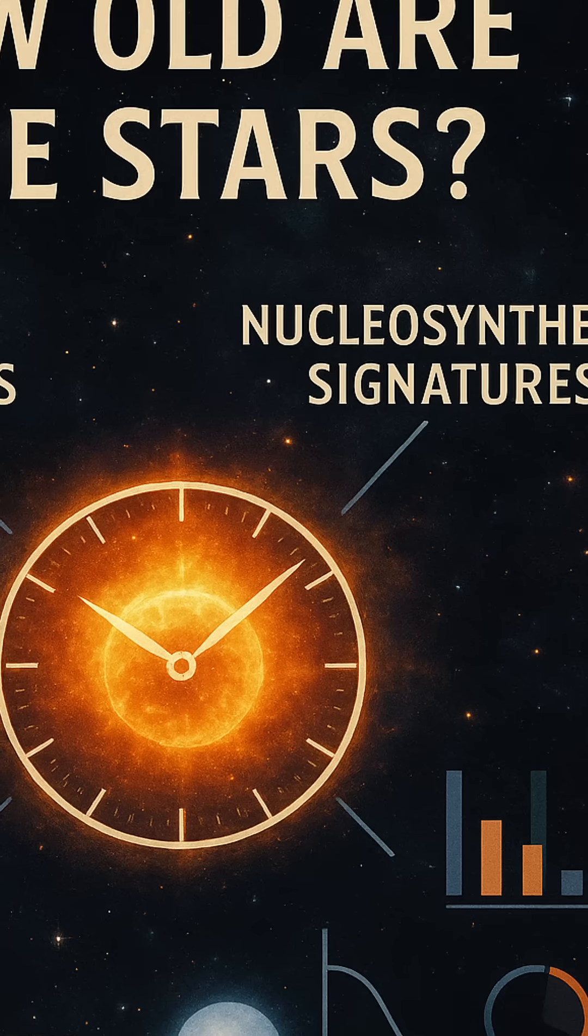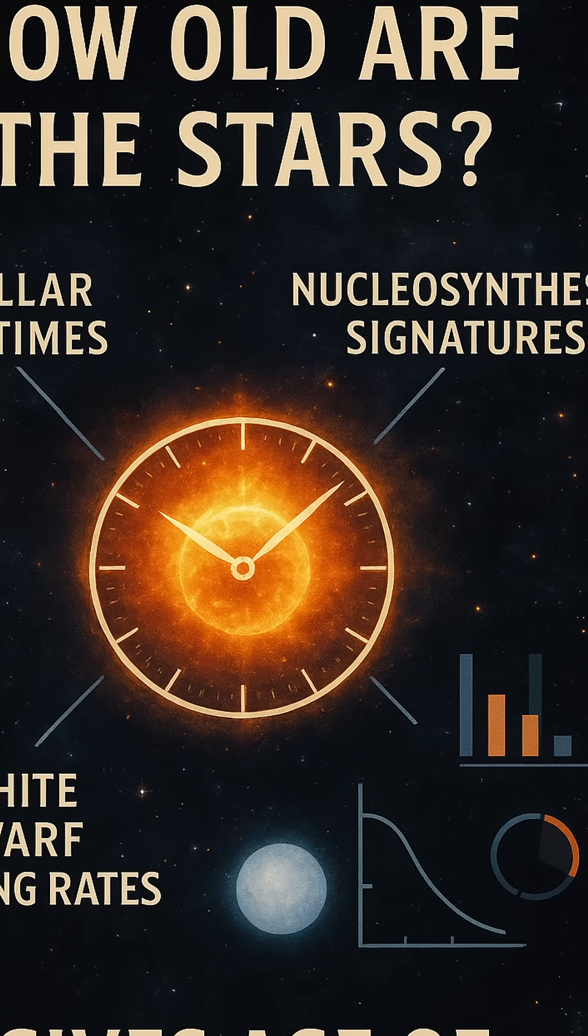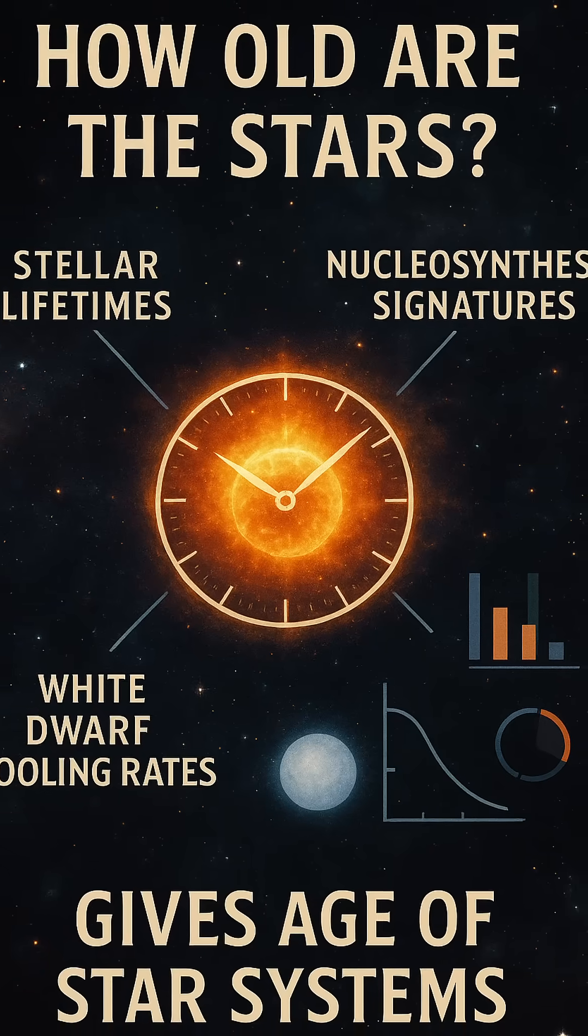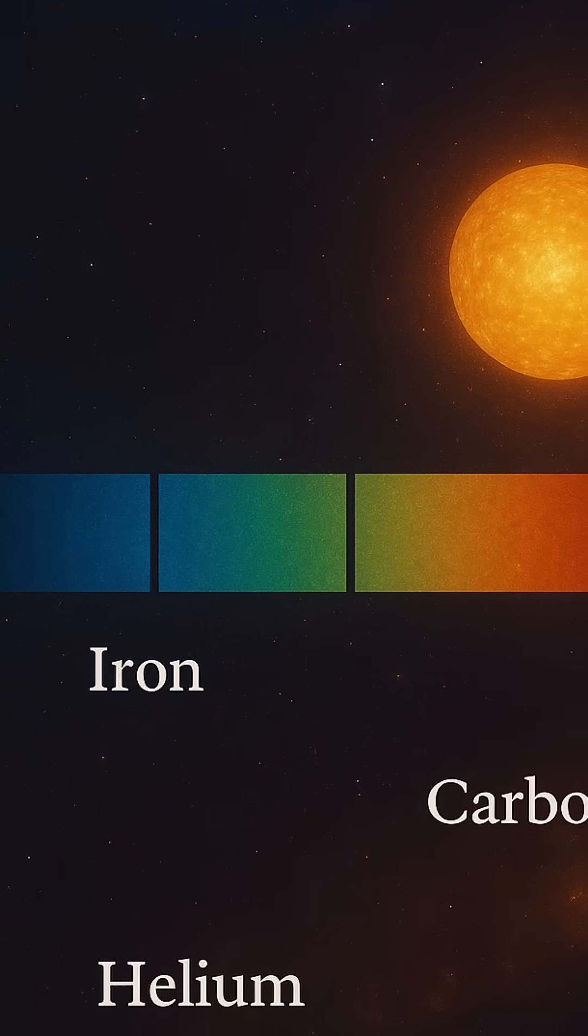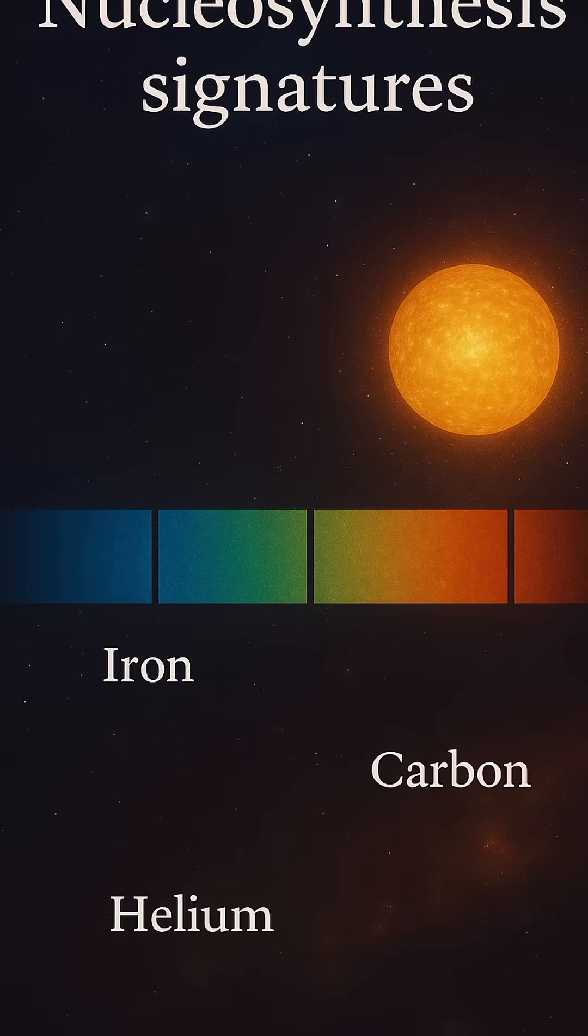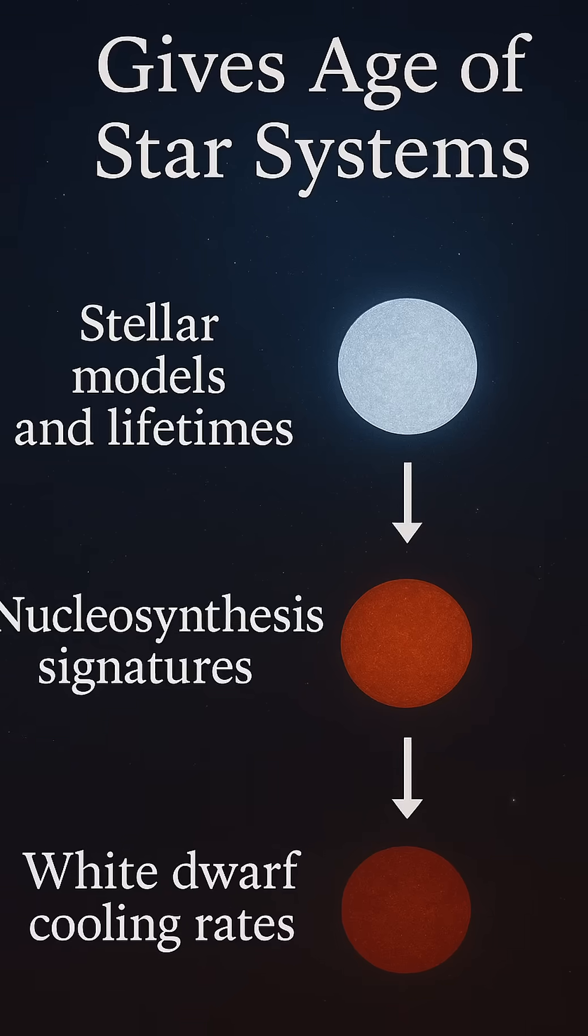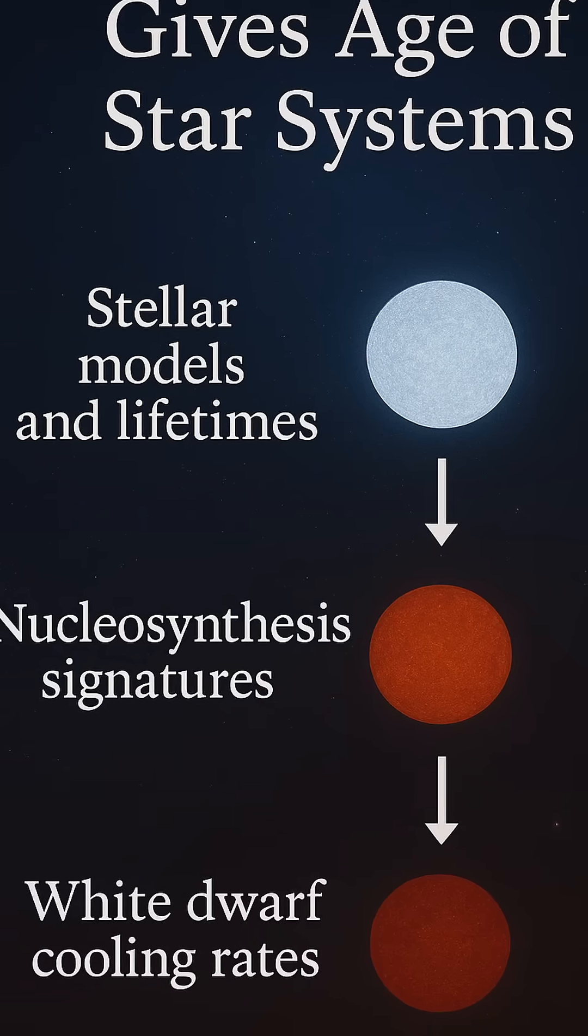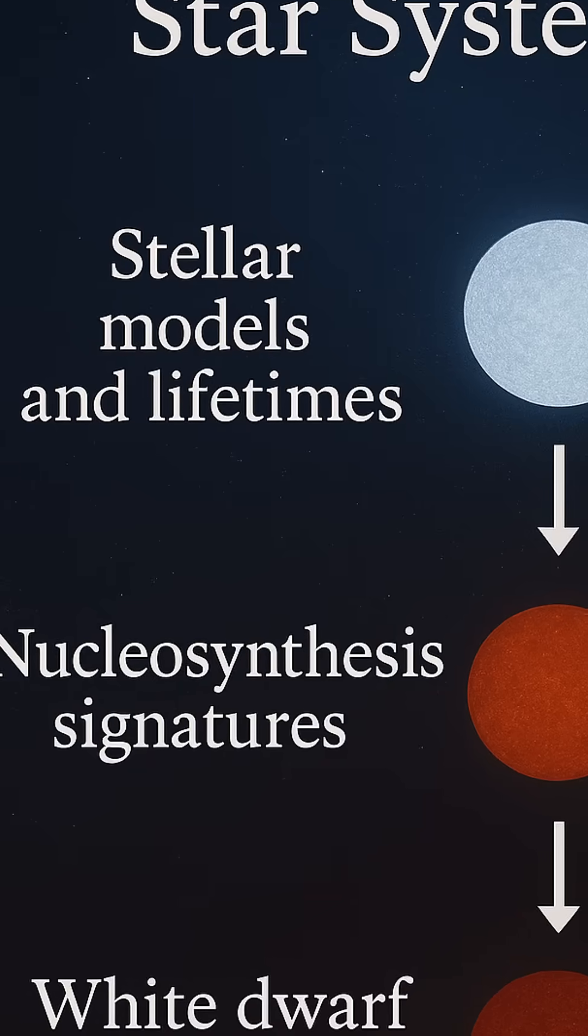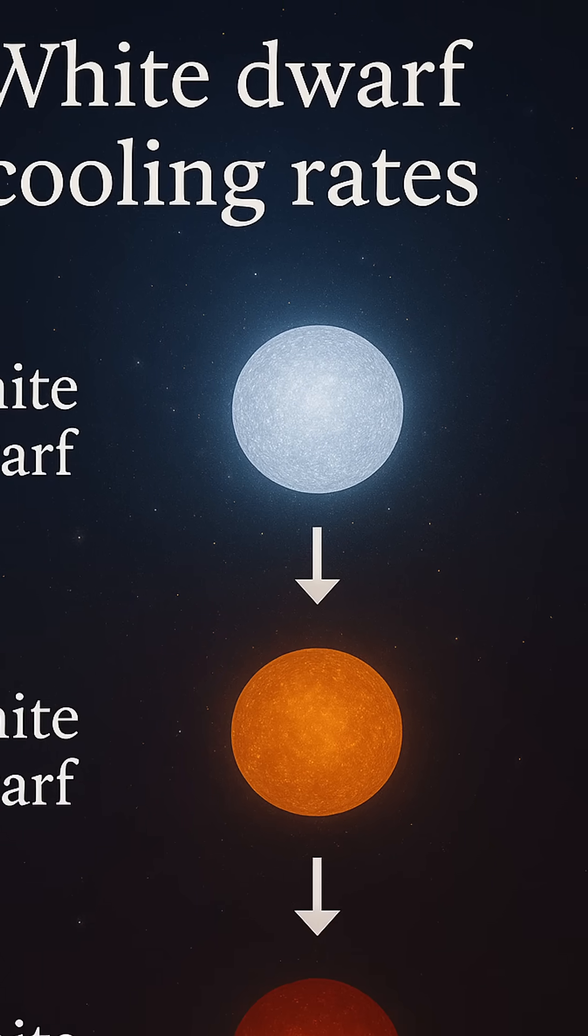Then there are white dwarfs, stellar corpses that no longer burn fuel. After a star like our sun exhausts its nuclear fuel, it sheds its outer layers and leaves behind a dense cooling core. This remnant slowly radiates away its heat over billions of years. Since we understand the physics of how white dwarfs cool, astronomers can use their temperature as a cosmic stopwatch. Cooler white dwarfs are older. By measuring how cold they are, researchers can estimate how long they've been fading, providing insight into the age of both the star and the system it once belonged to.